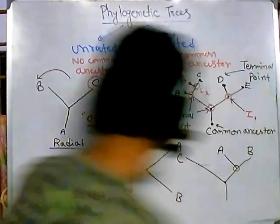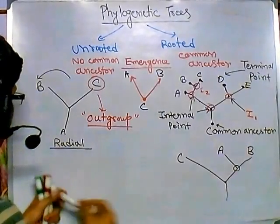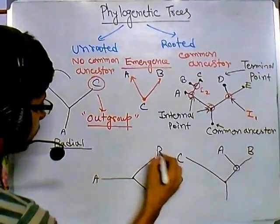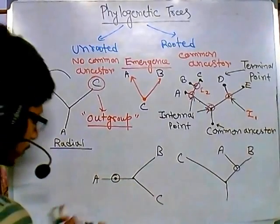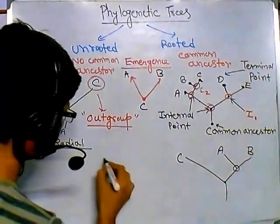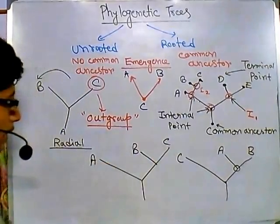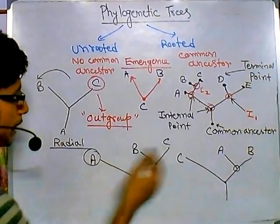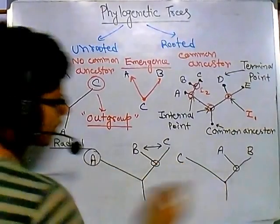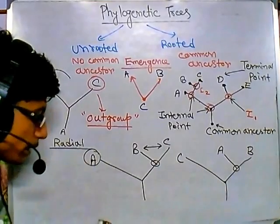If we choose A as the outgroup instead, the outcome is different. With a small rotation and dragging A's point down, the result shows A coming earlier in evolution, and then B and C sharing a common ancestor. So B and C are more closely related than A and B, or A and C. All of these diagrams give us different relationship patterns depending on which outgroup we choose.